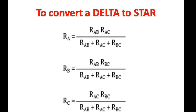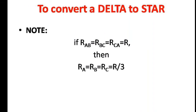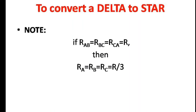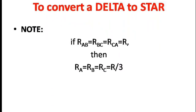Now we shall see the formulas used to convert delta connection to a star connection. If we have resistances named in delta connection as Rab, Rbc, and Rca, then in star connection they can be converted as Ra, Rb, and Rc. We can take Ra = (Rab · Rca) / (Rab + Rca + Rbc). Similarly we can find Rb and Rc. We must also note that if all resistances in delta connection equal R, then in the star network Ra = Rb = Rc = R/3.